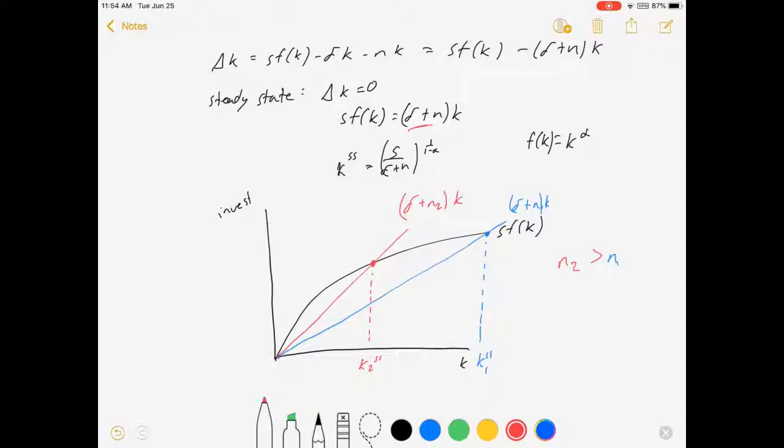Now, this allows different economies to have different growth rates, even if they have the same technology. If you're growing faster, your steady state level of capital will be lower, which means your capital per worker will be lower, which means your income per worker will also be lower, because that's K to the alpha in this case.